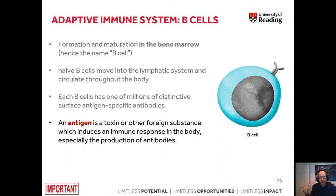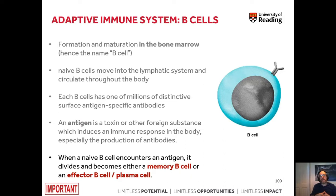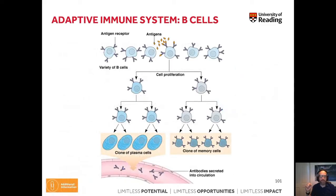Those cells can recognize antigens utilizing their specific antibodies. As a reminder, antigens are toxins or other foreign substances which induce an immune response in the body, especially the production of antibodies. So when a naive B cell encounters an antigen which fits like a key into a lock into the antibody, it becomes either a memory B cell or an effector B cell, also referred to as a plasma cell. Once a naive B cell in the system encounters an antigen, this leads to rapid cell division or proliferation of those cells.